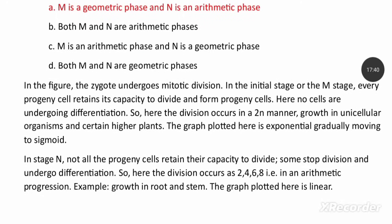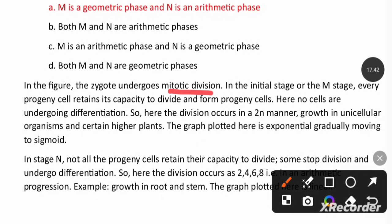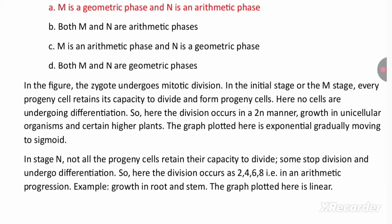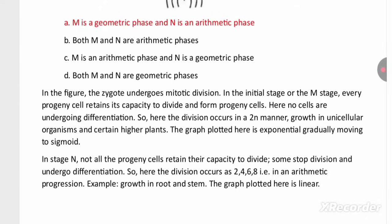In the geometric phase, growth is exponential and the graph moves to a sigmoid curve. In stage N (arithmetic phase), not all progeny cells retain their capacity to divide, so it follows an arithmetic progression.